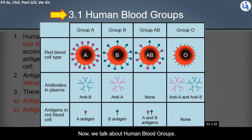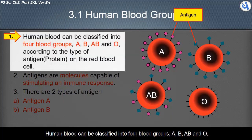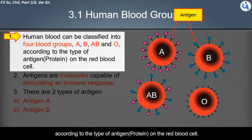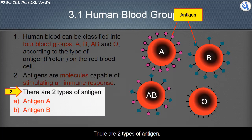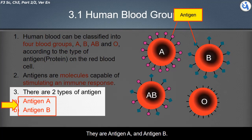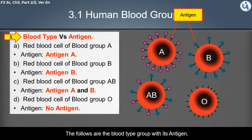Human blood can be classified into four blood groups: A, B, AB, and O, according to the type of antigen on the red blood cell. Antigens are protein molecules capable of stimulating an immune response. There are two types of antigen: antigen A and antigen B.